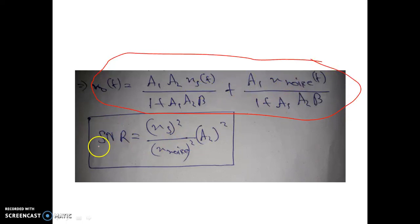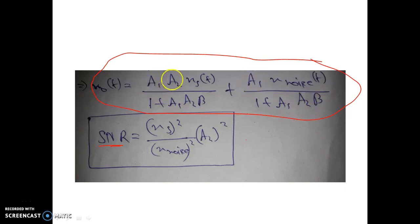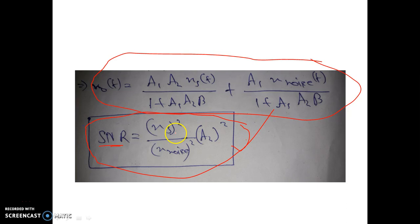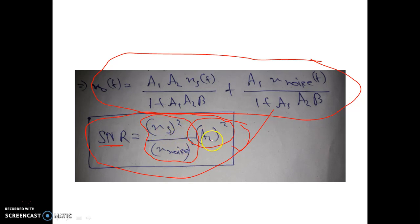The first term is the signal parameter and the second term is the noise parameter. So SNR with negative feedback equals the first term squared divided by the second term squared. Dividing these, the (1 plus A1·A2·beta) terms cancel and A1 squared cancels, leaving only A2 squared. Therefore, SNR with negative feedback equals Xs²·A2² / Xn². Previously, without negative feedback, SNR was only Xs² / Xn². Now A2 squared is multiplied, so SNR is improved with application of negative feedback.